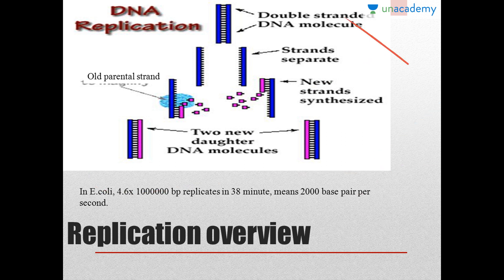The efficiency of replication is very important. In E. coli, 4.6 × 10⁶ base pairs are present and replicate in about 38 minutes — approximately 2,000 base pairs per second, which is very high. In human beings, 6.6 × 10⁹ base pairs are present, and the replication rate is also very high.